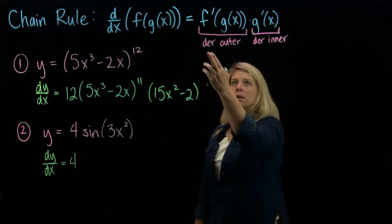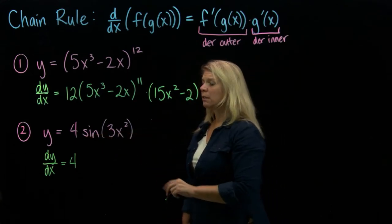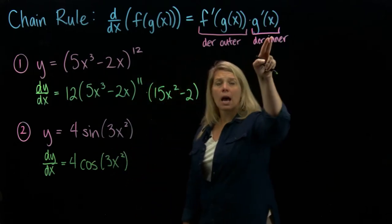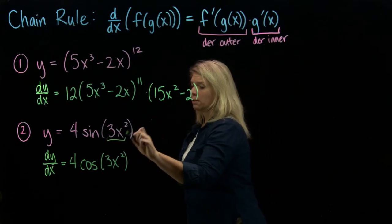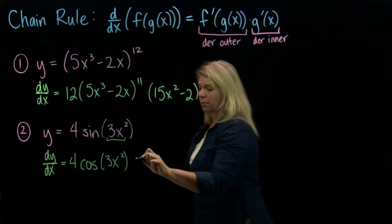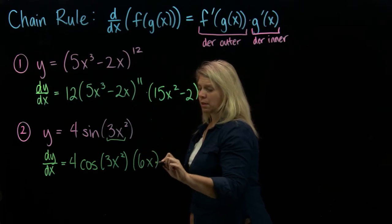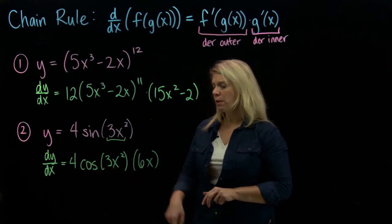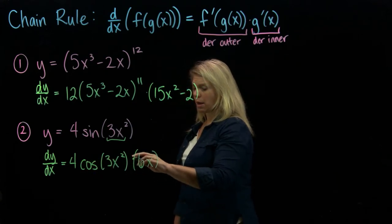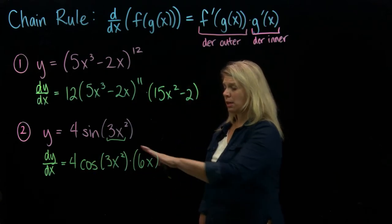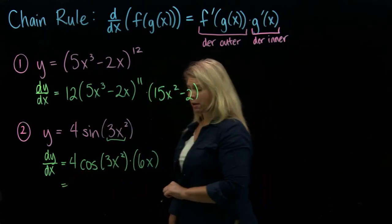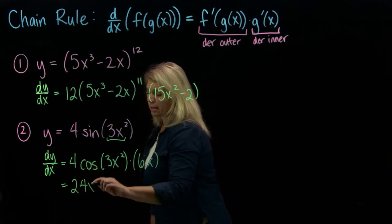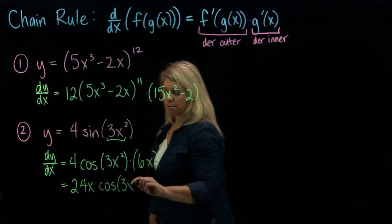Here's where we're going to use chain rule. Our outer function is the sine function, so the derivative of sine is cosine. Leave the inside alone, and then times the derivative of the inner function — times the derivative of 3x squared, so times 6x. I'll clean this up: the 4 times 6x makes 24x out front, times cosine of 3x squared.